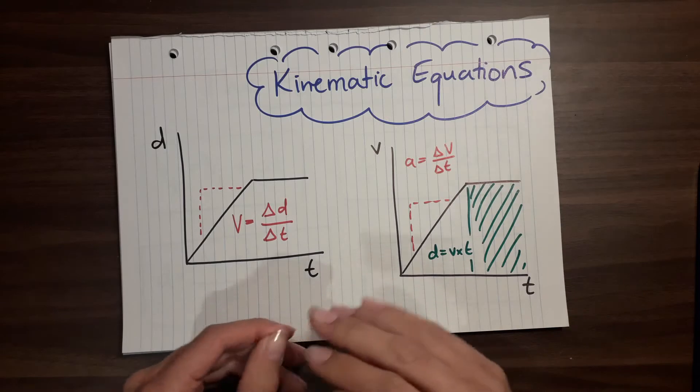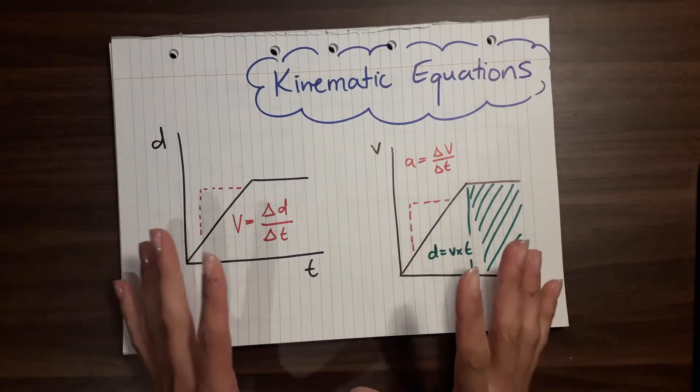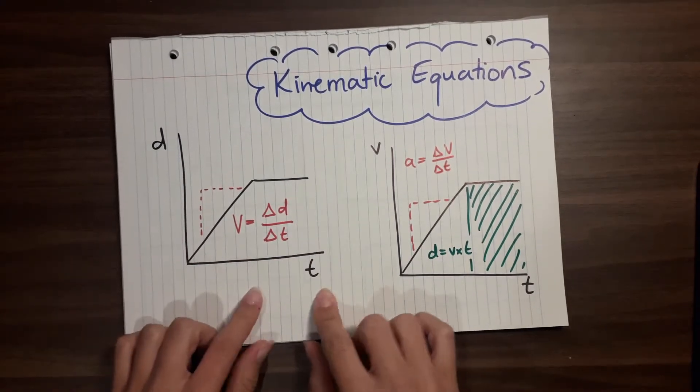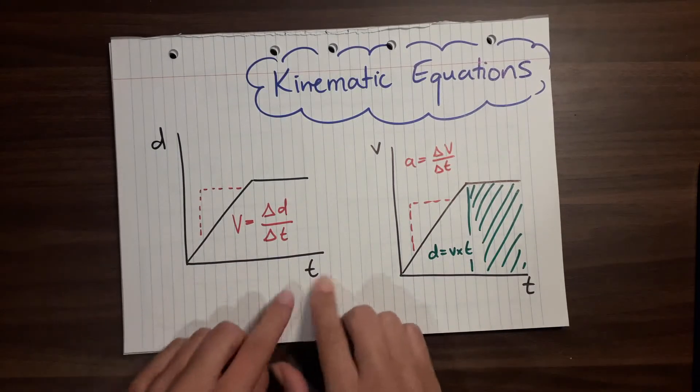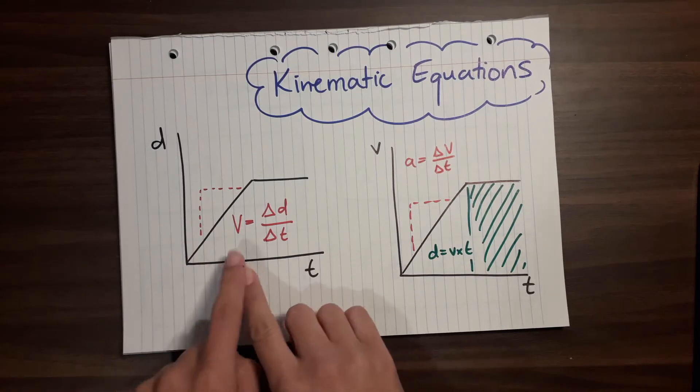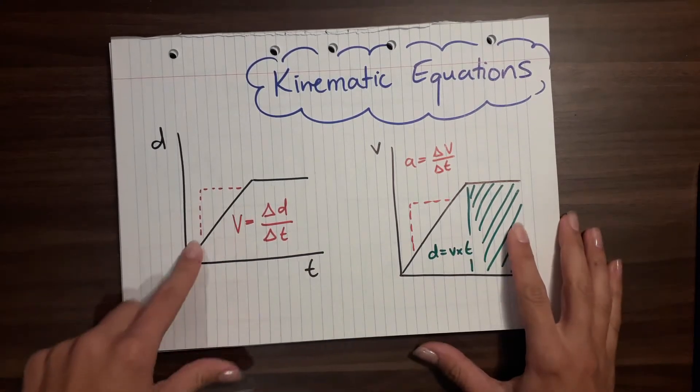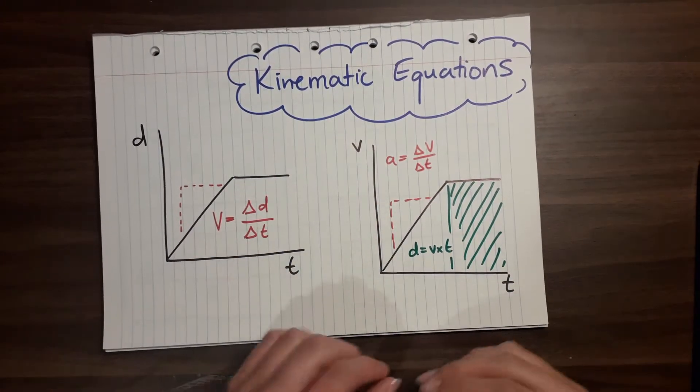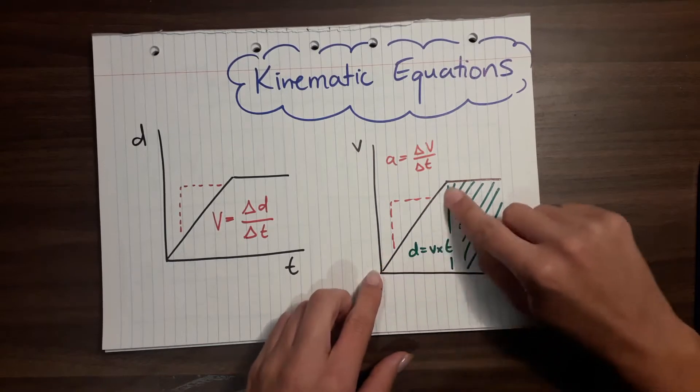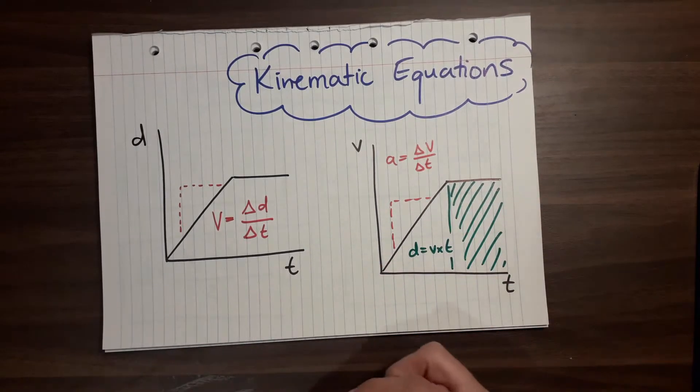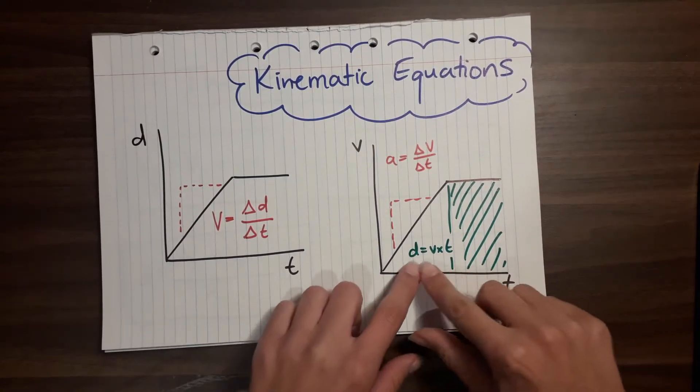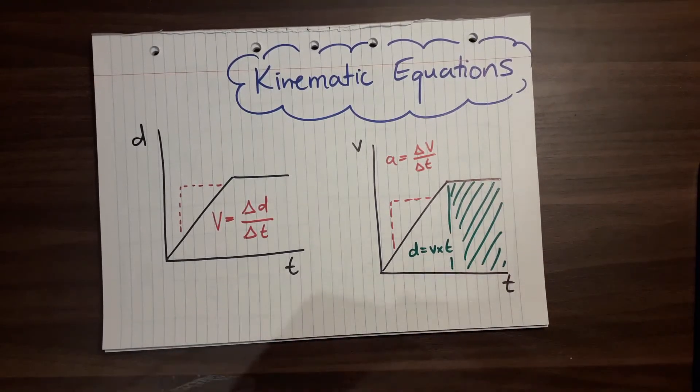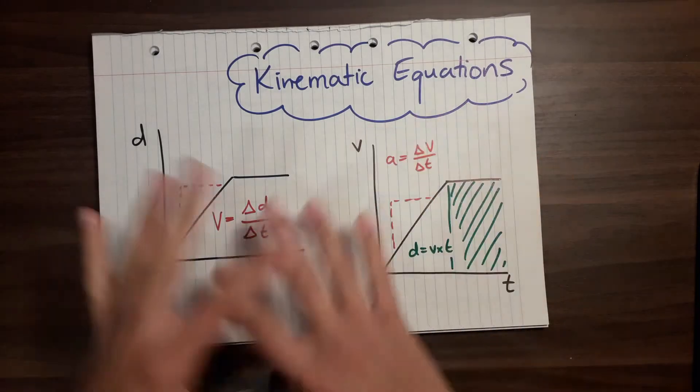As you know, we can put motion on graphs. This is a distance-time graph, and if we had information here we could actually calculate some stuff from this graph to find speed - that would be like finding the gradient. If we had a speed-time or velocity-time graph, we could also find out a couple of things: we could use the gradient to find acceleration, and we could also calculate the area under the graph to find the distance.